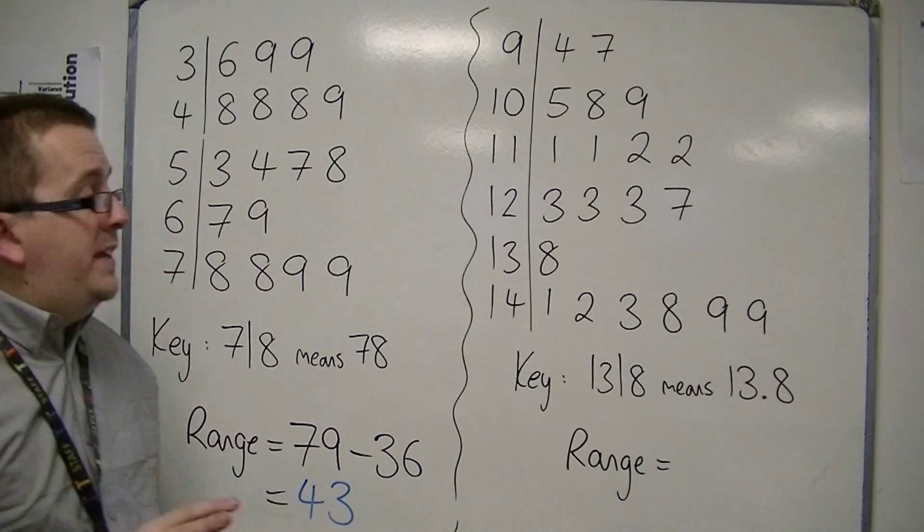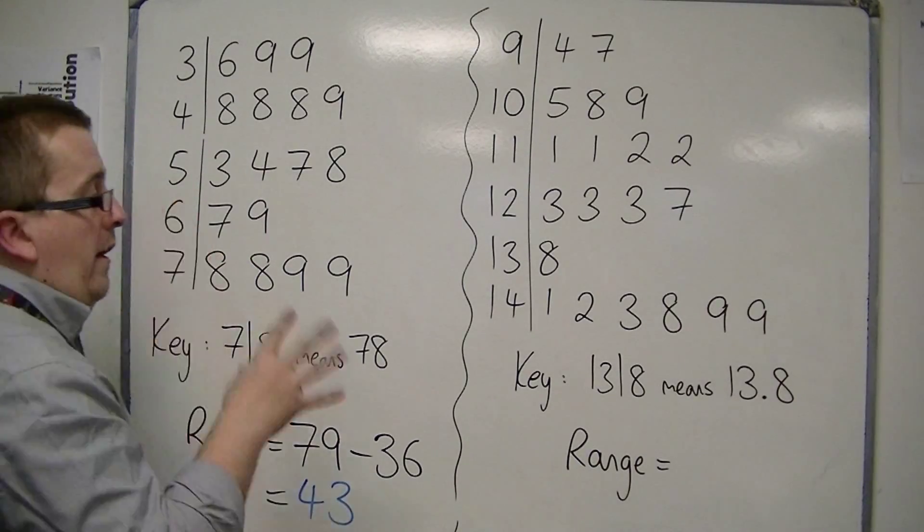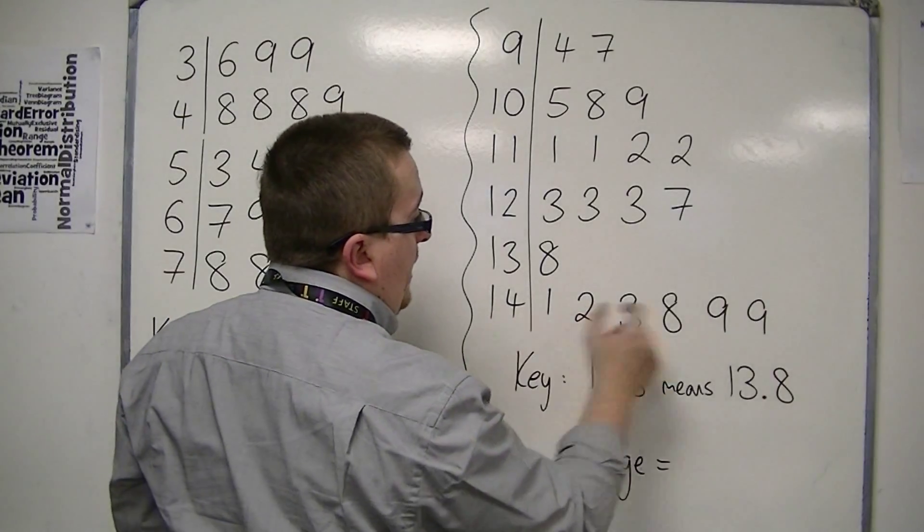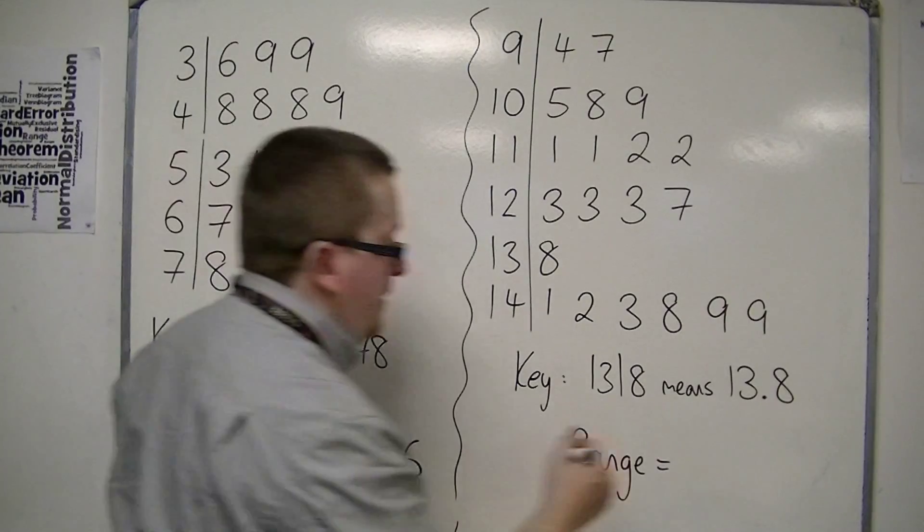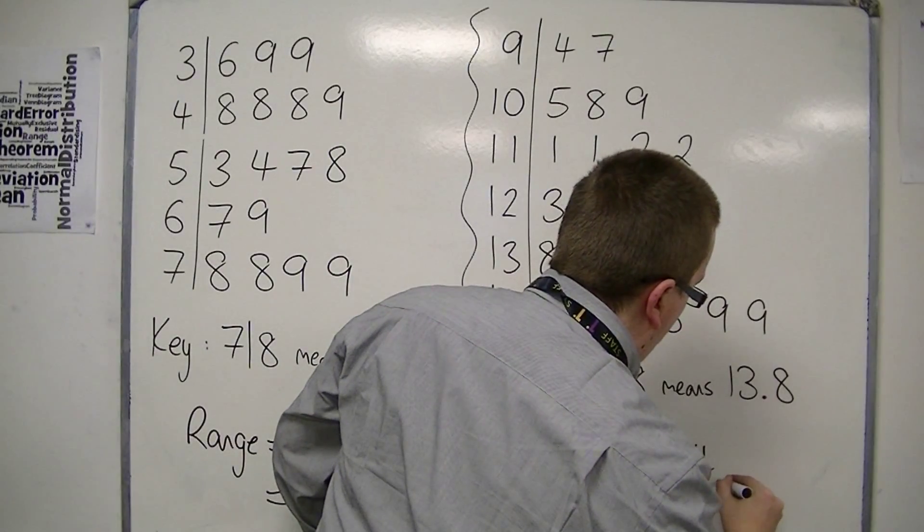Now in the second example, we need the largest number, which is 14 and then 9. But the key tells me that's 14.9, so 14.9.